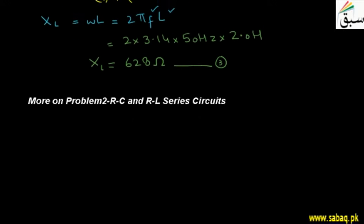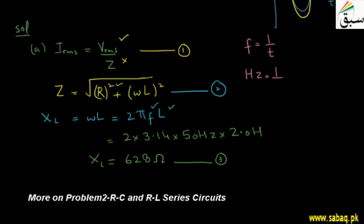Welcome students, we are doing a problem solving on RC and RL series circuit topics. We will solve it further. As we have seen in the previous part, we have solved for the reactance inductance L and found that we have 628 ohms. We have called this equation number 3.